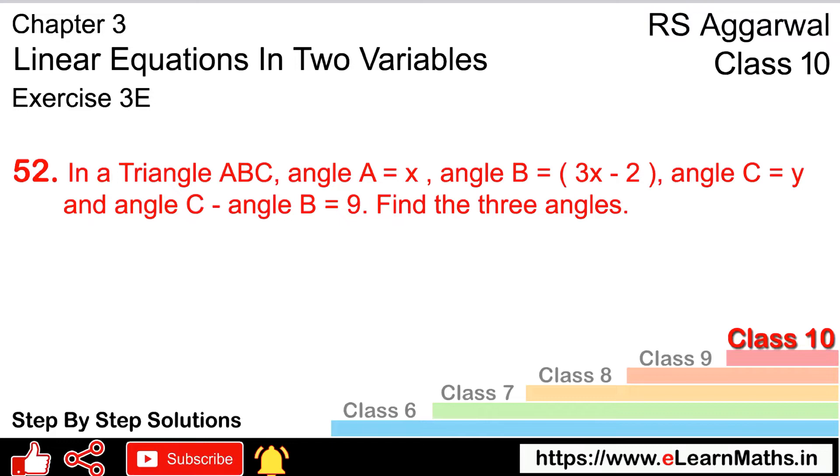And we will give this naming: ABC triangle, angle A = x degrees, and angle B = 3x minus 2, angle B = 3x minus 2 degrees.